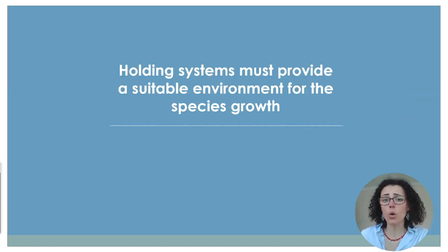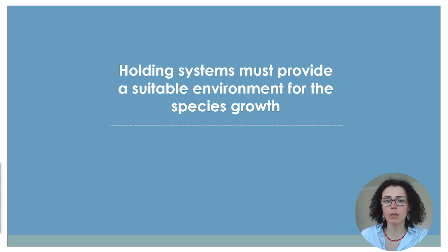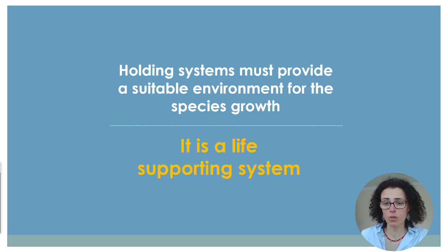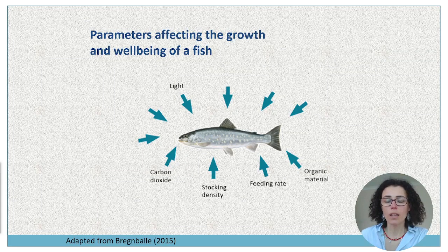So these RAS systems are holding systems — they must provide a suitable environment for the species to grow. Bear in mind, there is no other option for those organisms to be able to get all the things that they need, including the food, the optimal temperature, the optimal pH. So these RAS systems are a life support system, and because of this, you need to be very careful and you need to understand the parameters that affect the growth and well-being of a fish.